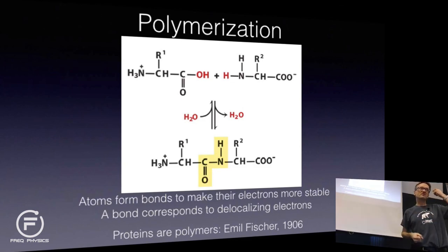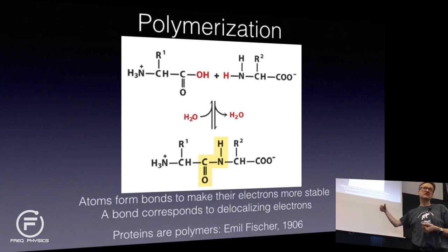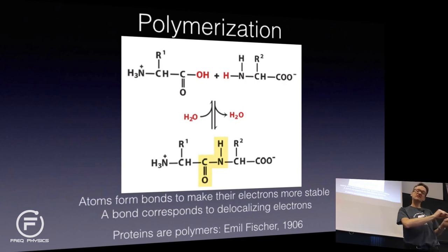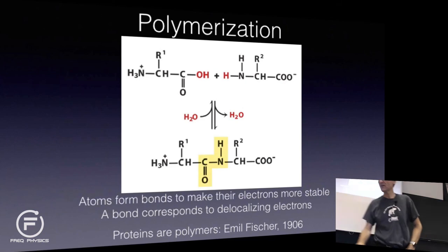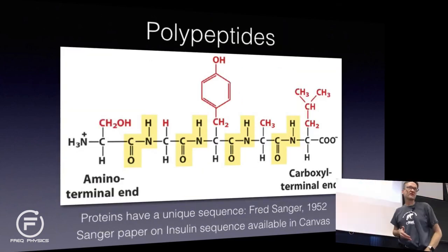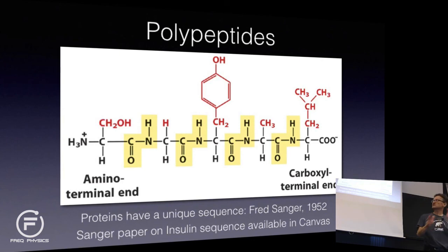There are only 20 amino acids, but if you now have a string of say 10 of these, there are 20 to the power of 10 different combinations, and that starts to be fairly large numbers. So by connecting them in specific strings, you get much larger diversity. But just the string is not enough.